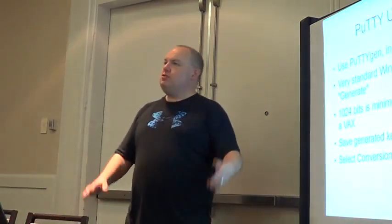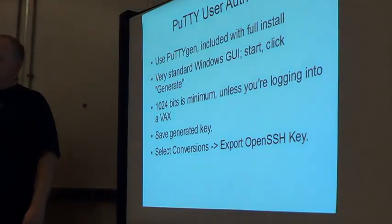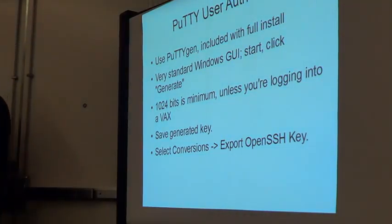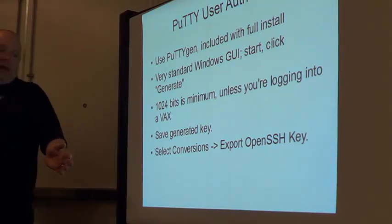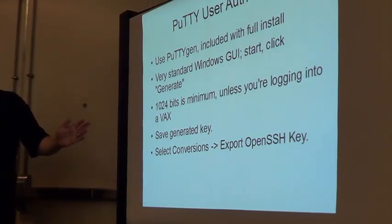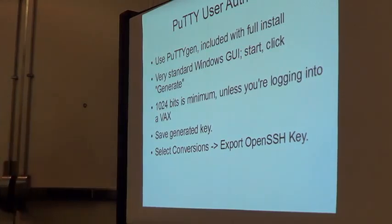PuTTY uses a program called PuTTYGen. It's a very standard Windows GUI. Click Generate. You want at least 1024 bits unless you're using SSH on a VAX. Save the key you generate and then select Conversion, Export OpenSSH Key. If you don't export the key to OpenSSH format, it won't work.